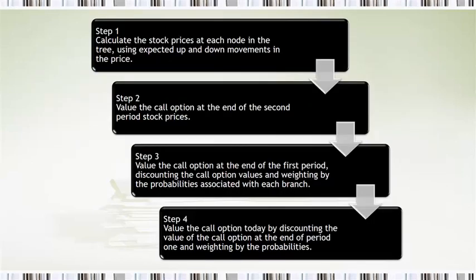So the process we're going to do is we're going to calculate stock prices in each node of the tree, and we're going to go into two periods here. We could expand this to more periods, but we're just going to simply look at two periods here. Once we get the stock prices at the end of two periods, we're going to value the call option.